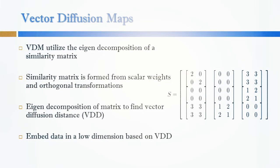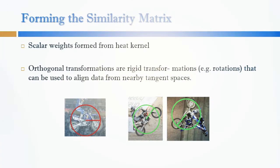The second algorithm we looked at was vector diffusion maps. Vector diffusion maps utilize the eigen decomposition of a similarity matrix in order to perform dimensionality reduction. This similarity matrix is formed from orthogonal transformations scaled by the respective weights. These scalar weights are formed from the entries of a heat kernel matrix just as in diffusion maps. The orthogonal transformations on the other hand are rigid transformations like rotations that can be used to align data from nearby tangent spaces.